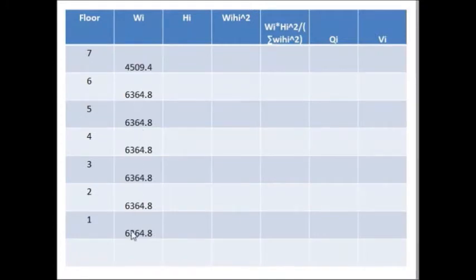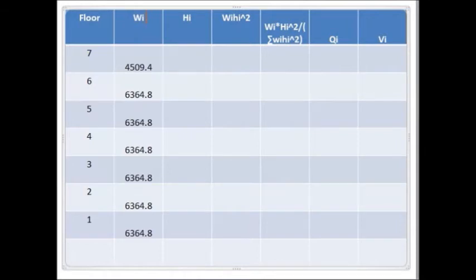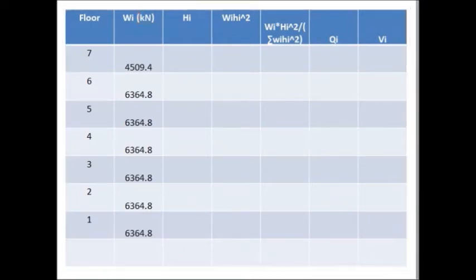Now, as we know, this second column is for seismic weight, so you just write down the seismic weight we have already calculated in kilonewtons. You can see here, the seventh story is the roof, so the roof weight is 4509.4. Then the sixth story is the floor, so the weight of this particular floor is 6364.8. And similarly, you can see up to story number one, the weight will be the same as the floor.